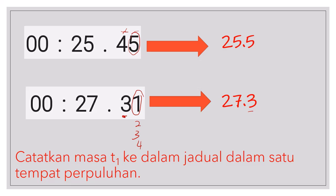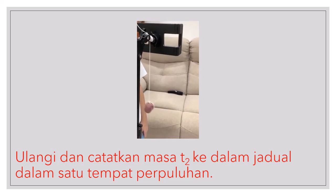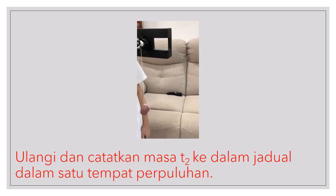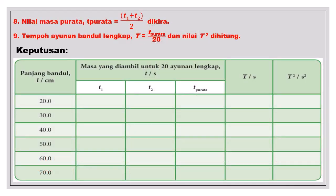Cikgu nak kamu tuliskan, catatkan masa untuk 20 ayunan dalam satu tempat perpuluhan. Kemudian bagaimana mengkirakan masa purata? T purata sama dengan T1 tambah T2 kemudian bahagi 2. Jadi contohnya katakan untuk 30 cm, untuk panjang 30 cm, kita dapat 22.2.